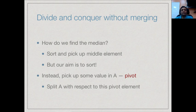Of course there must be a catch, and the catch is how do we find the median. At the beginning of our discussion we said that one reason we want to sort is to do statistical things like find the median. If we have sorted the array then the median is the middle value, but our goal now is to sort the array — so we cannot assume we have the median. It is a chicken-and-egg problem: we cannot use the median to sort.